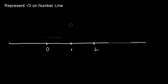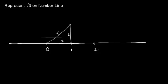First of all, we will find root 2 on this number line. We will make one triangle on the number line. This triangle has two sides of unit 1, so its hypotenuse will be root 2. From this hypotenuse we can find another point on the number line — this point will be root 2.